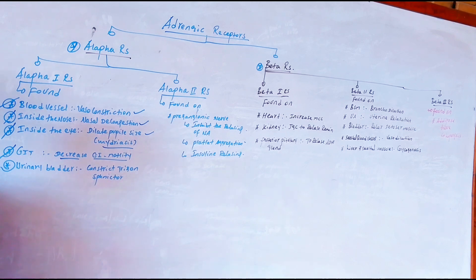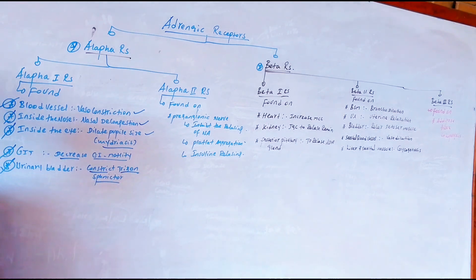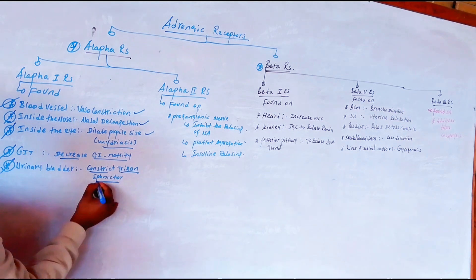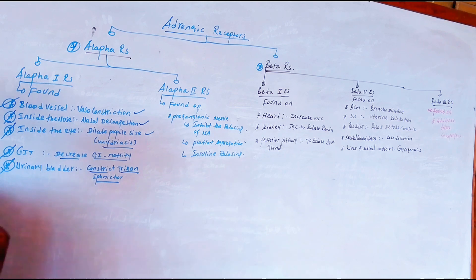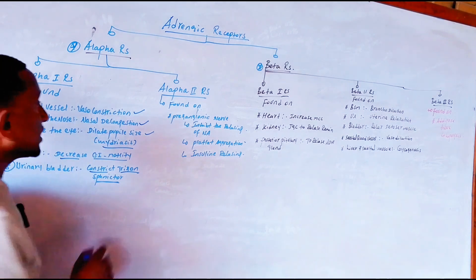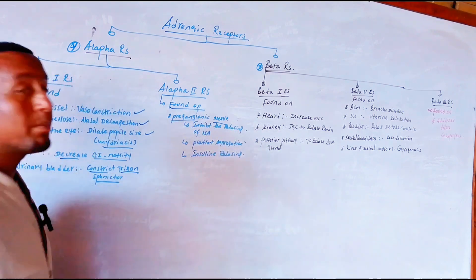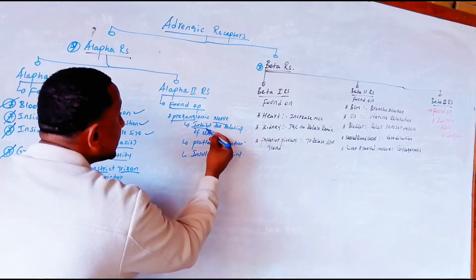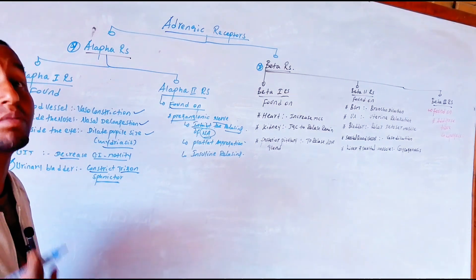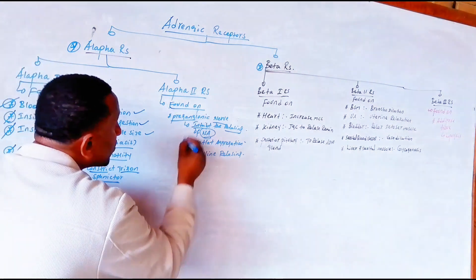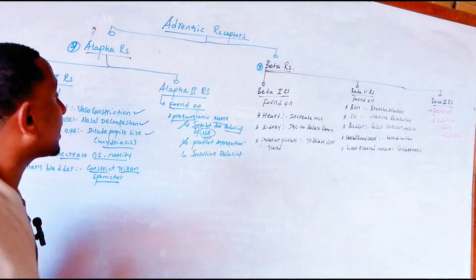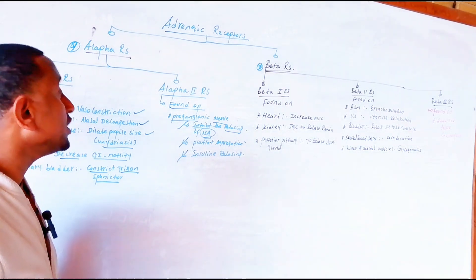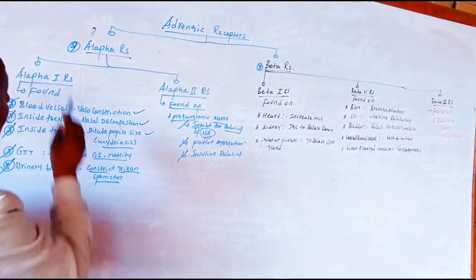In the gastrointestinal tract, Alpha 1 decreases GI motility. In the urinary bladder, Alpha 1 constricts the trigone and sphincter, which is important for urinary retention. Alpha 2 is less common and is found on the preganglionic nerve. Alpha 2 inhibits the release of noradrenaline from the presynaptic nerve, affects platelet aggregation, and decreases the release of insulin.